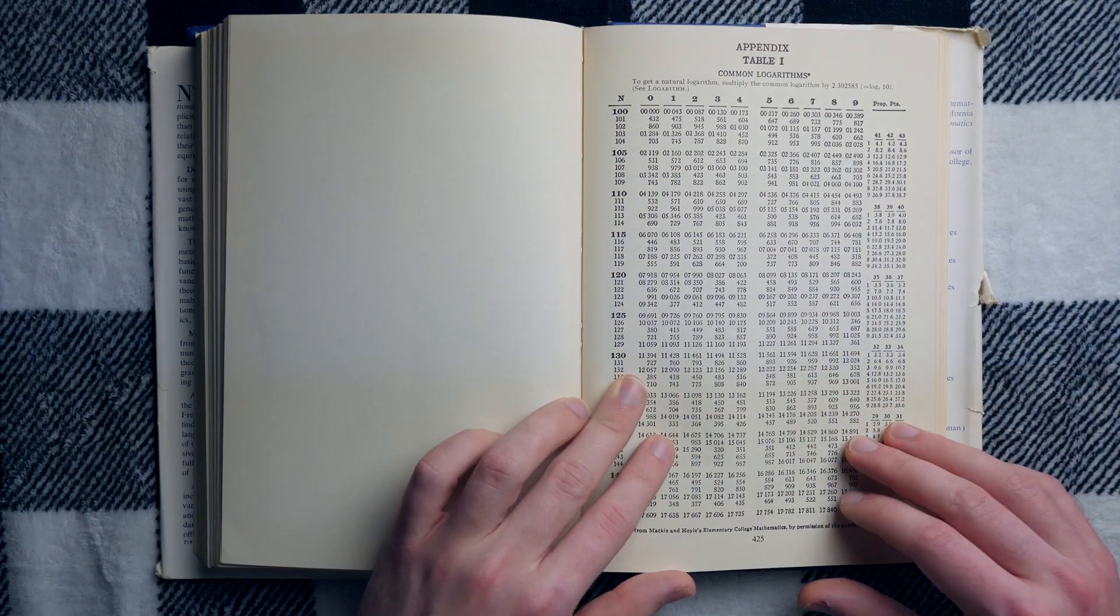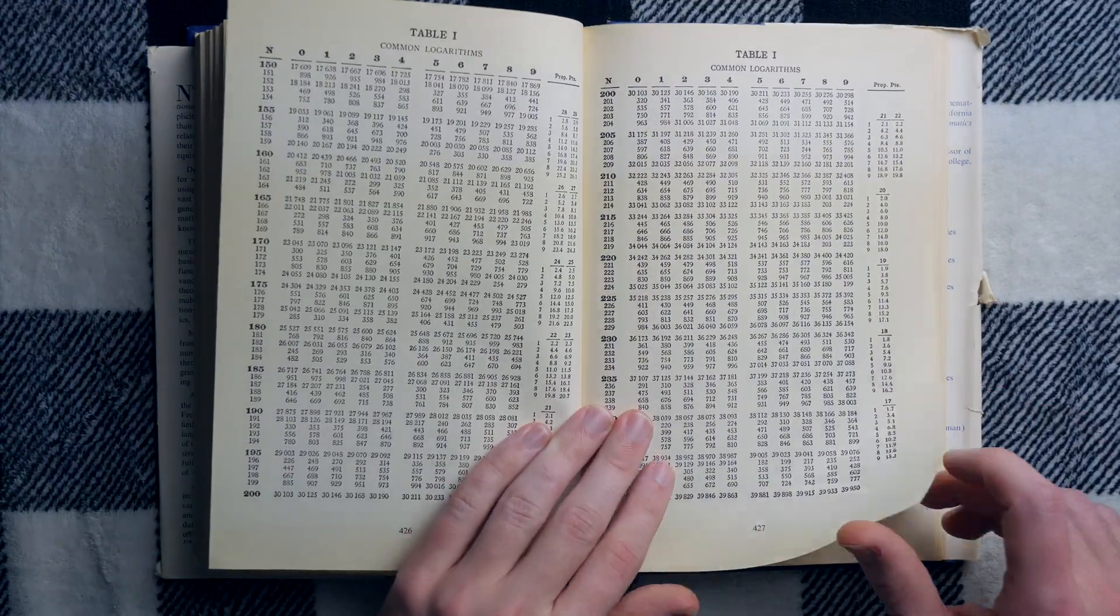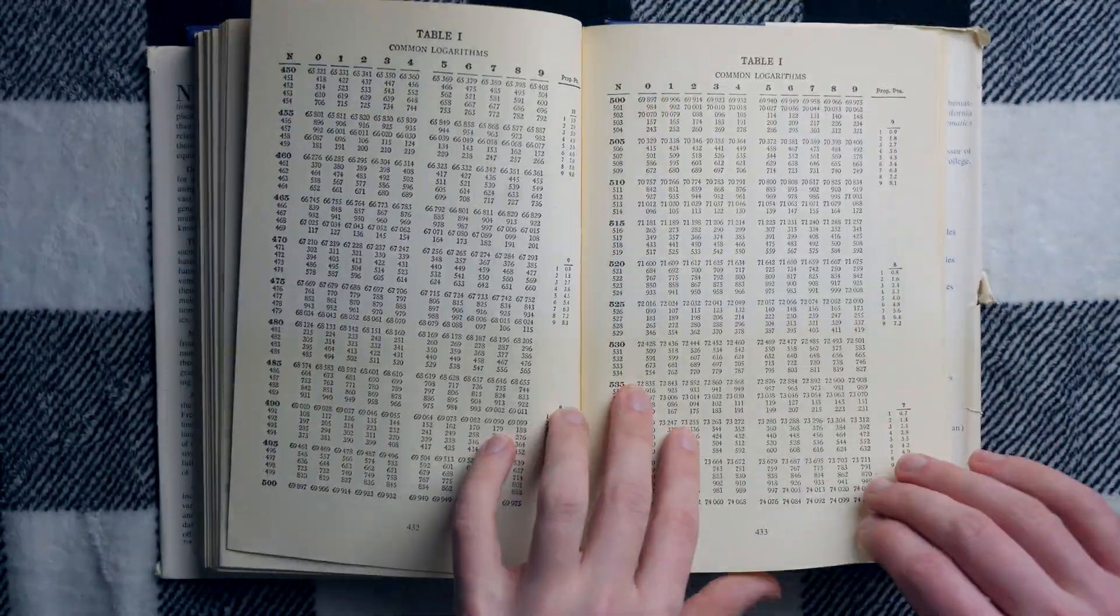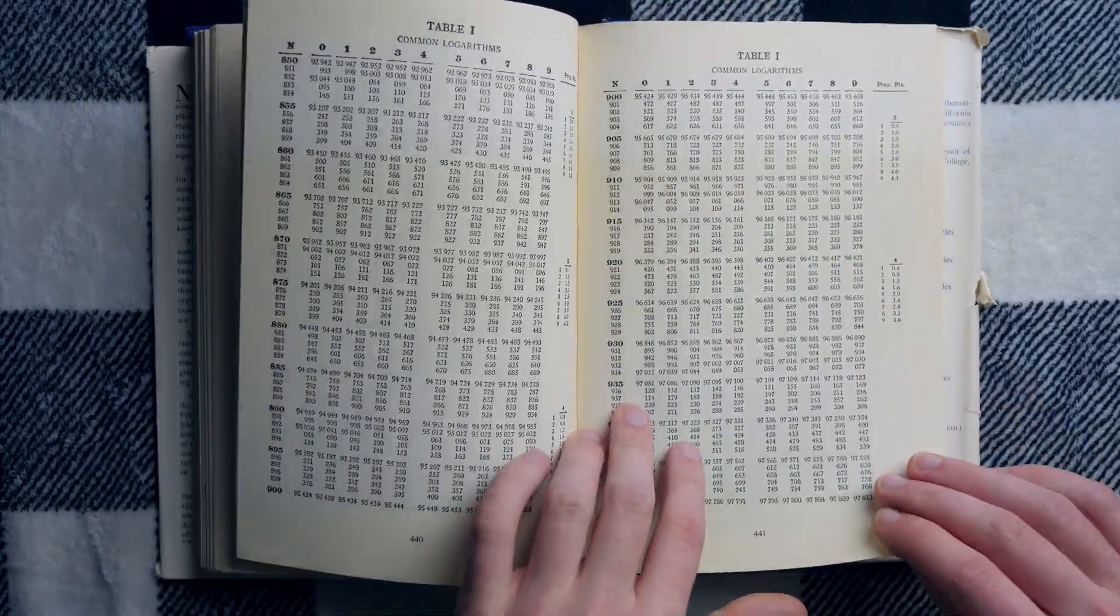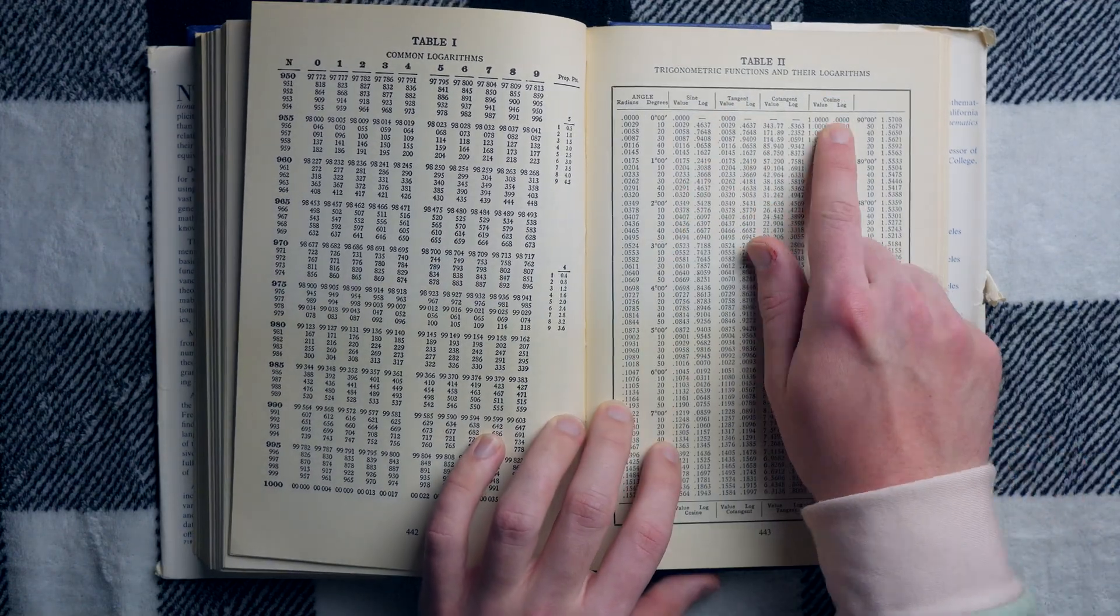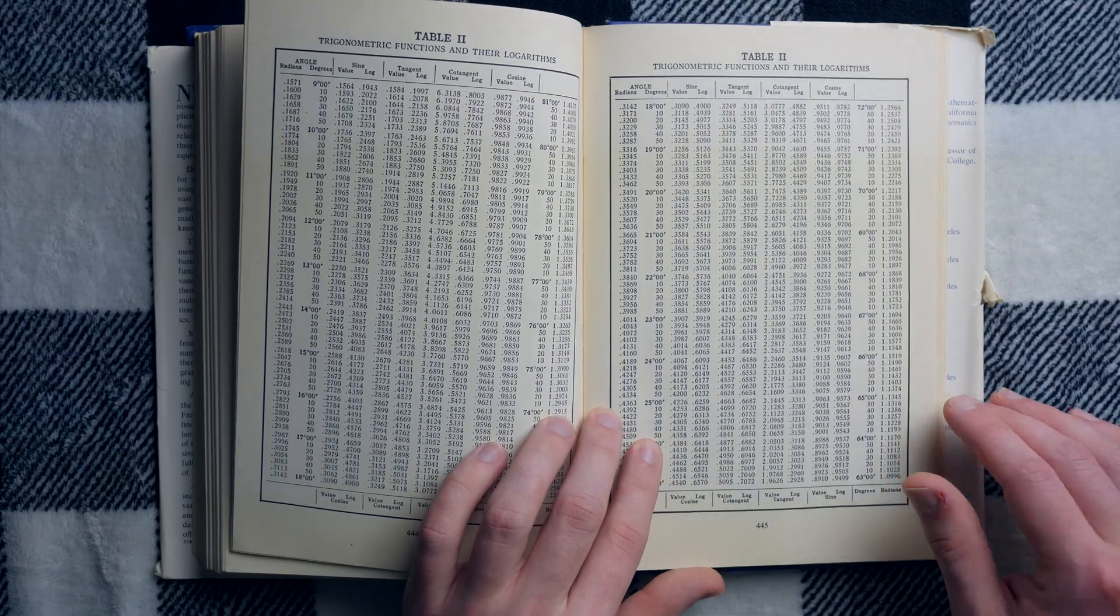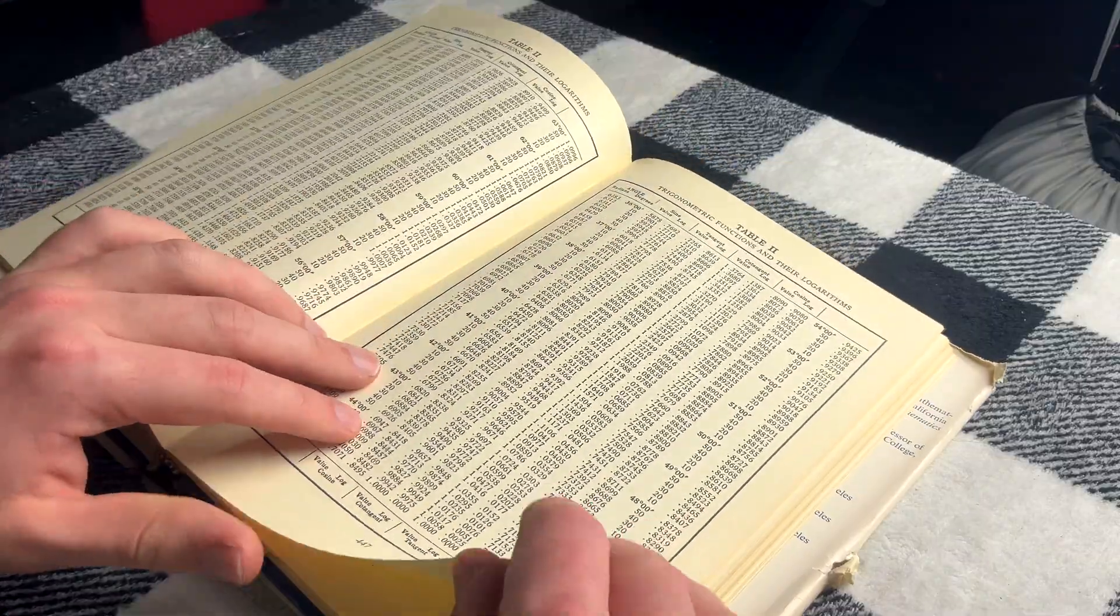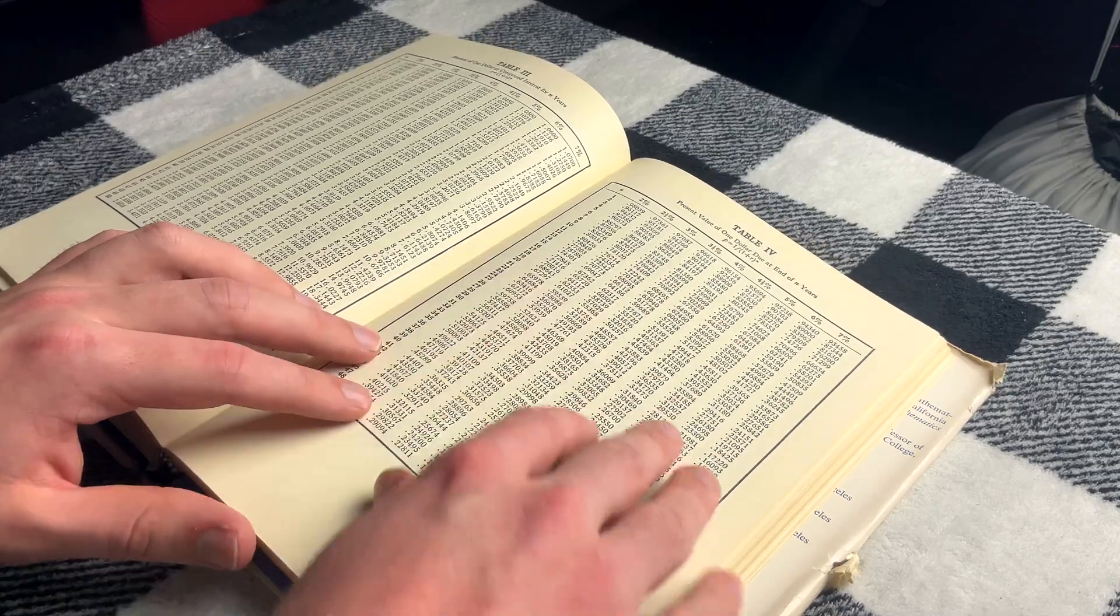So you got appendices with common log values, which is neat. More common log values. Quite a few. I'd hate to be the guy who has to calculate these back in the day. Seems like pretty dull work. But, you know, I guess if you like doing math but aren't that good at it, then it's a job. Trigonometric functions and their logarithms. Okay, that's cool. More trig functions and their logarithms. Sine, tangent, cotangent, cosine.